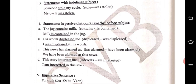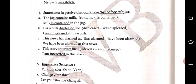Some passive statements don't take 'by' before the subject. For example: 'The jug contains milk' → 'The milk is contained in the jug.' 'His words displeased me' → 'I was displeased at his words.' 'The news has alarmed us' → 'We have been alarmed at this news.' 'This story interests me' → 'I am interested in this story.' Note that there is no 'by agent' in these sentences — they don't take 'by' before the subject.